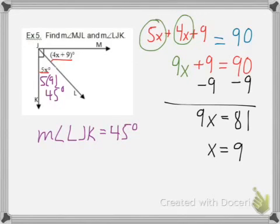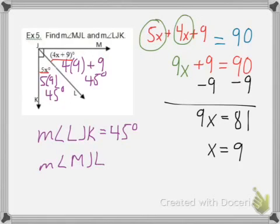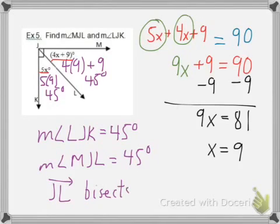Alright, well what about the other angle? If I do 4 times 9, that's 36, add another 9, that would also be 45 degrees. So the measure of angle MJL is also 45 degrees. In this case, the ray JL bisects that angle. Two complementary angles which are bisected are 45 degrees each. We could say that JL bisects angle MJK.